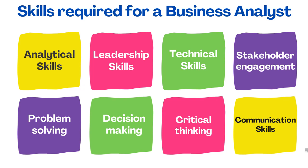Third is technical skills. Technical skill means having knowledge of all technicalities — not only in the IT sector but for any sector. It is good if the BA has knowledge of their field. For example, if in the IT field, they should know about operating systems, networking, SDLC, database concepts, hardware, and other technical concepts. Fourth is stakeholder engagement — business analysts are likely to deal with stakeholders at all levels of an organization, right up to the CEO.